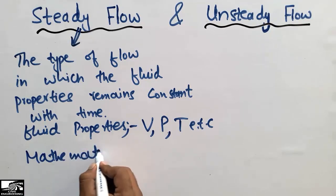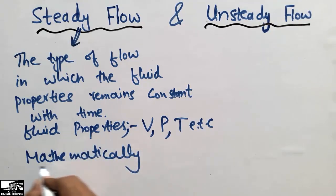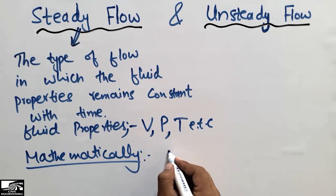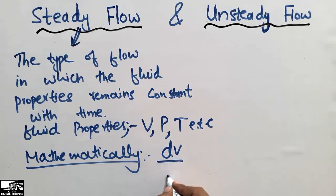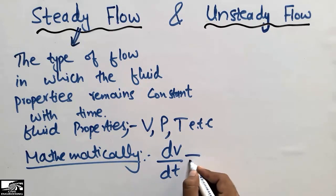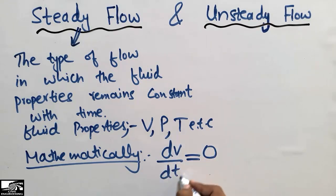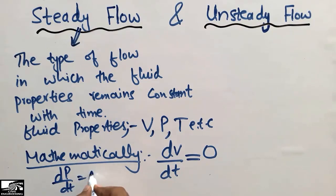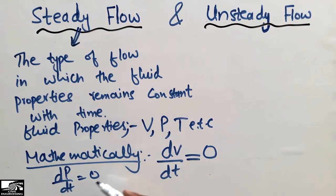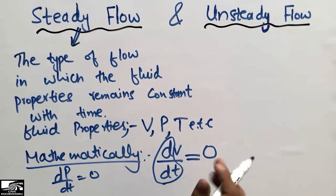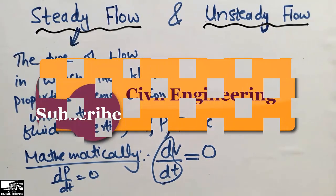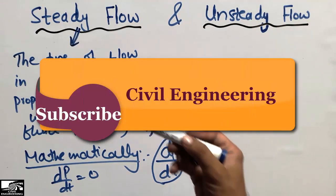Mathematically, steady flow can be expressed as: the derivative of velocity with respect to time equals zero, the derivative of pressure with respect to time equals zero, and the derivative of temperature with respect to time equals zero — because there is no change in these fluid properties with respect to time.